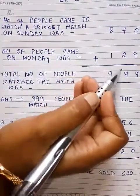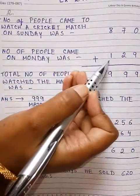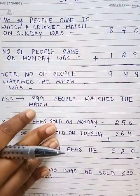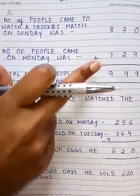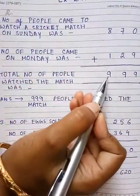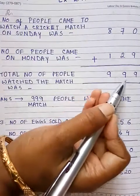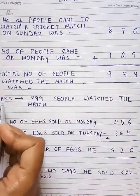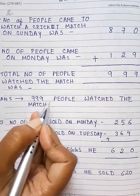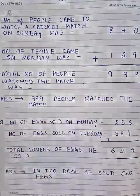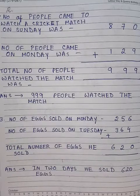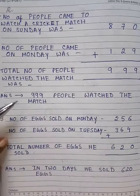Here we are adding these two numbers directly — we are not writing the numbers a second time. After adding, we are getting 999. Next we are writing the answer: 999 people watched the match. If you want, you can follow this new method.